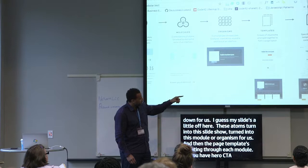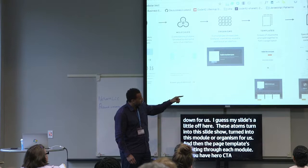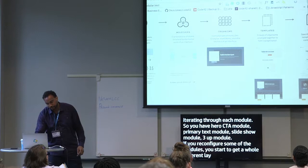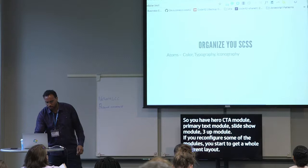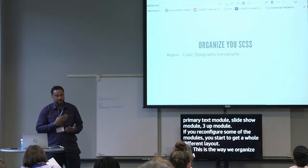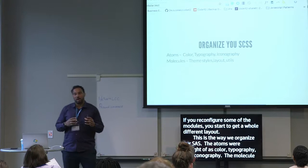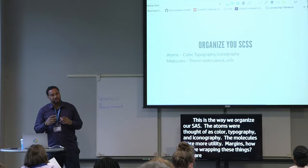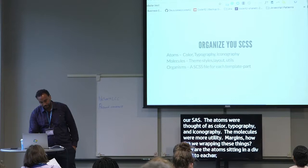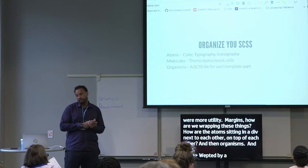You can start to see that if you reconfigure some of these modules, you get a whole different layout. This is how we organized our Sass — the atoms we thought of as color, typography, and iconography. The molecules were more theme, layout, and utilities overall: padding, margin, how we're wrapping things, how atoms sit in a div next to each other or on top of each other. And then organisms, represented by a Sass file for each module.